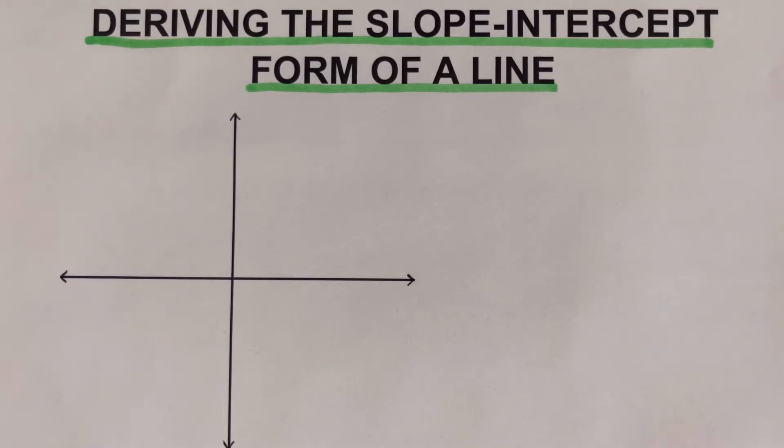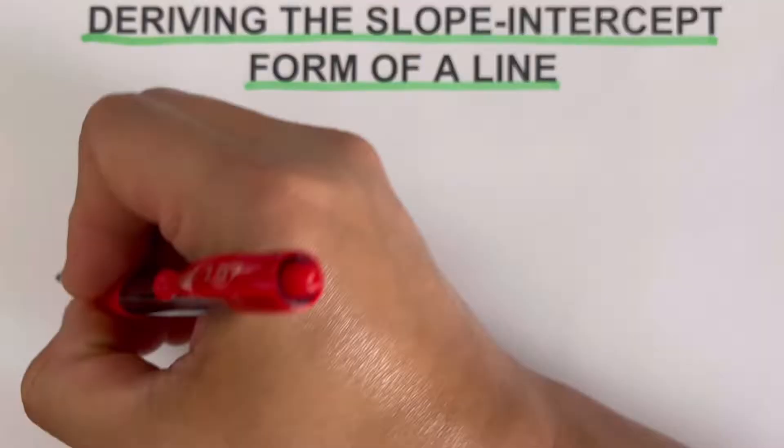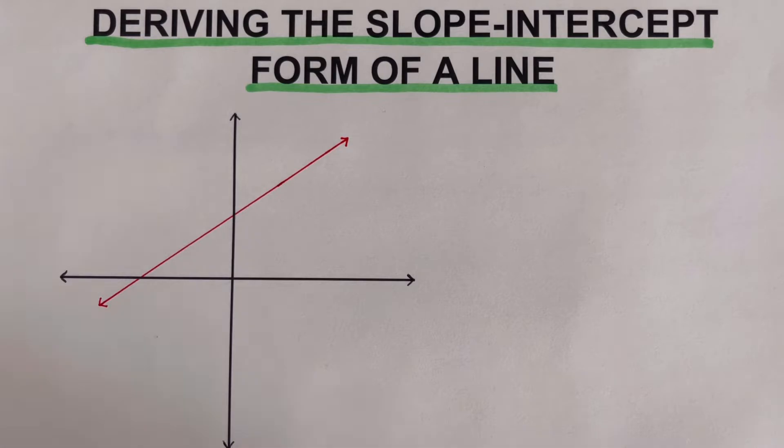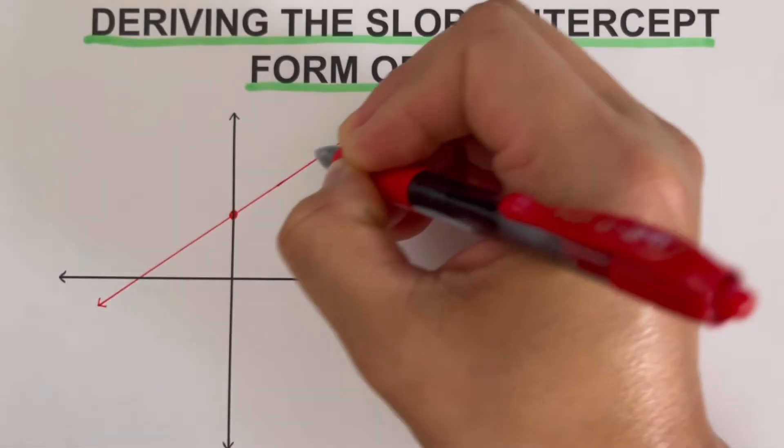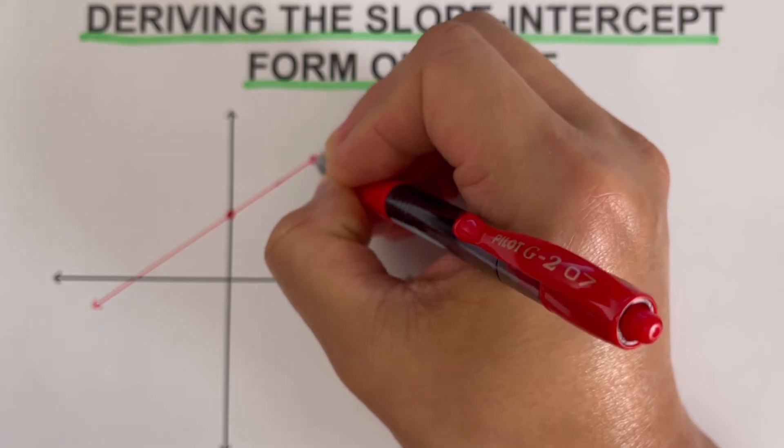So let's get started by drawing a line on this Cartesian coordinate plane. Okay, so let's plot two points on this line. So this will be the first point, and this is the other point.